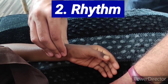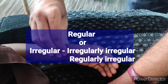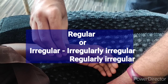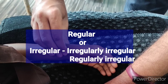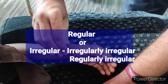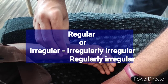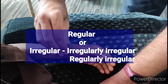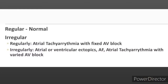The second point is rhythm. Normal rhythm is regular and abnormal is irregular. Irregular rhythm may be irregularly irregular or regularly irregular. Regularly irregular can be seen in atrial tachyarrhythmia with fixed AV block and in atrial flutter. Irregularly irregular is seen in ectopics, atrial fibrillation, and tachyarrhythmia with varied AV blocks.